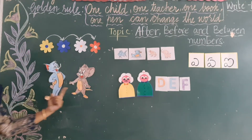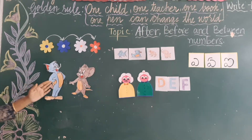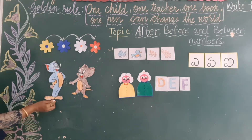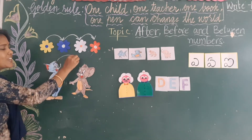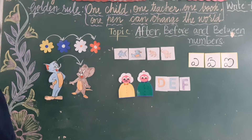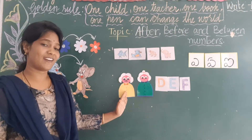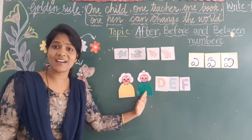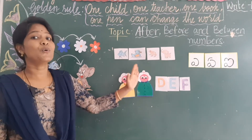Now look at these two pictures. Who are there on the board? Yes, there is Tom and Jerry. So after Tom, who is there? Yes, after Tom there is Jerry. Now look at these pictures — here you have Grandpa and on the other side you have Grandma. Now tell me, after Grandpa who is there? Yes, after Grandpa, Grandma is there.